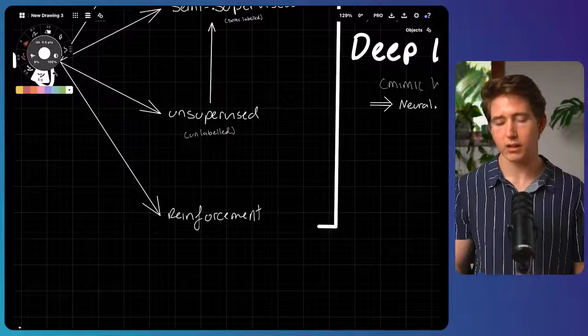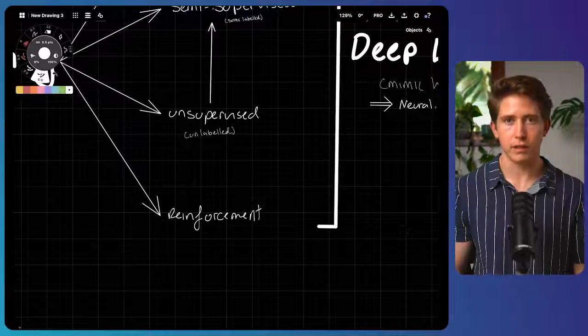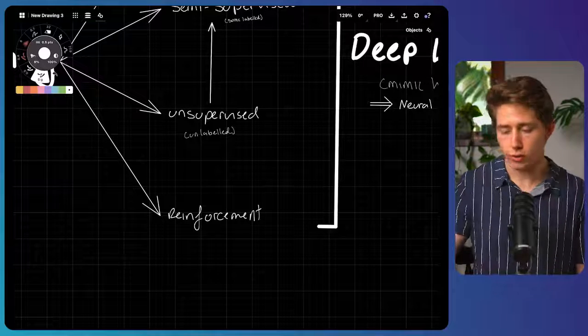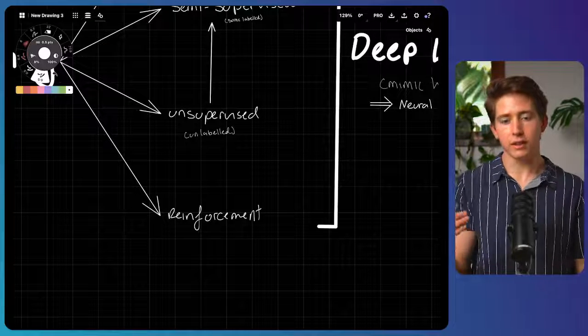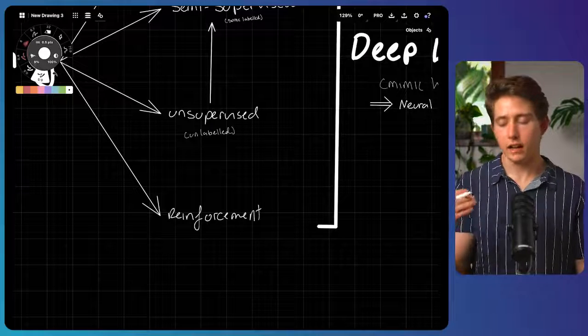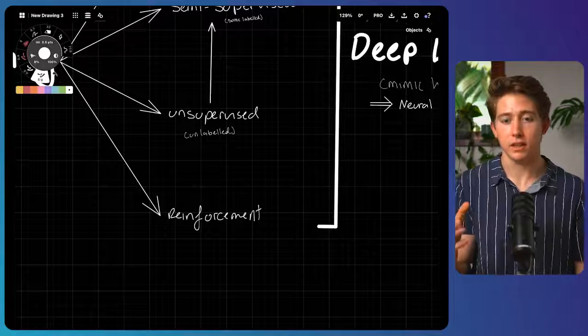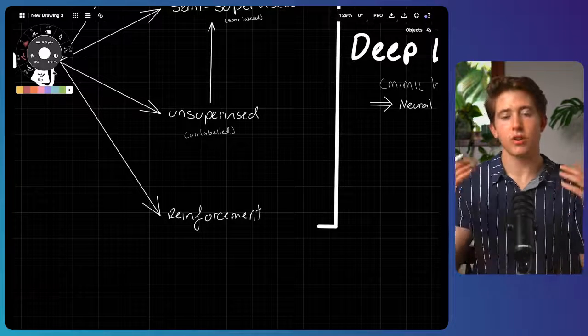And then the final category is reinforcement learning. And so this occurs when you have a very clear goal. Say you want a robot to open a door. You can effectively train this AI by getting it to continuously attempt this goal and then seeing how close it gets to actually completing it. And so it's constantly getting this feedback, this reinforcement on how it's going.